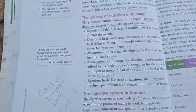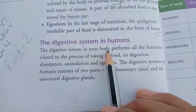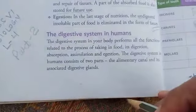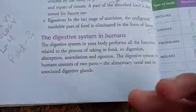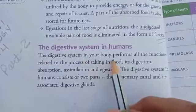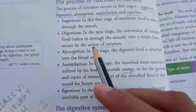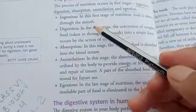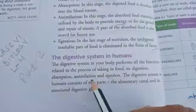Hello everyone, this is Class 6 Biology video of Lesson Number 4 — the Digestive System in Humans, Part 1. Part 2 has already been uploaded. In this topic we will learn what kind of organs take part in the digestive system and what glands take part in the digestive system. The digestive system in our body performs all the functions related to digestion.